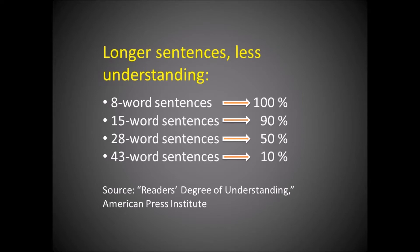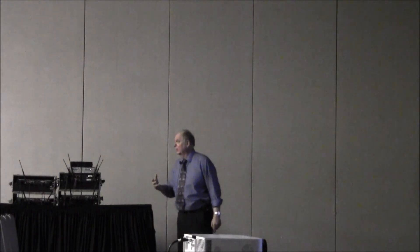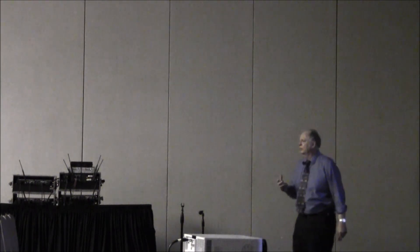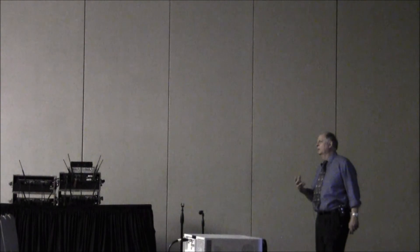Studies have shown: if you use eight-word sentences, 100% of your readers will get them right away. Fifteen-word sentences, 90%. Twenty-eight-word sentences, half of your audience will not be able to read them on first reading — they'll stop and go back and rethink them. Forty-three-word sentences, only 10% of your audience will get them the first time. And I'm not talking about people who can't read well — I'm talking about good readers. So if you're writing for a lay audience and using 43-word sentences, they're going to put the piece down and walk away.